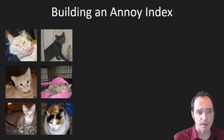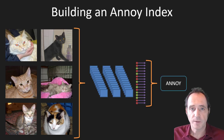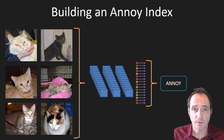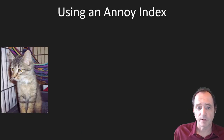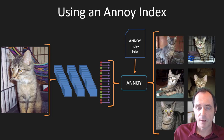To build an index, we take a folder of images, feed them through the modified convolutional neural network — which is already trained with existing weights — and that gives us our feature vectors. We then feed those into an Annoy index, and once we've done that with a few thousand images we can save the index as a file. We can then use this index to find similar images by loading the index file, passing the source image through the same network to get its feature vectors, and feeding those into Annoy to find the nearest neighbors. The output is a list of images that have similar features to the input image.